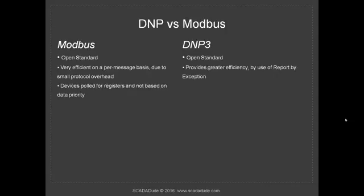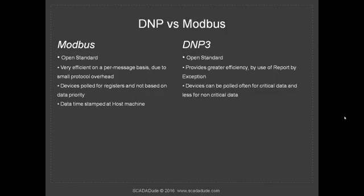In Modiverse we pull the registers not by the priority of the data. On DMP3 they've got these different classes and you put different data in different classes, and that's how you pull the data. So you can pull the more critical data more often and the non-critical less often.